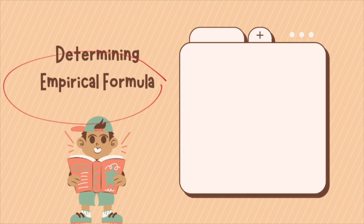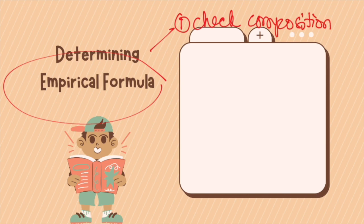The first step is to check the composition of your compound to be sure each element is given in grams. If the composition is given in percentages, then you have to convert them to grams, assuming a 100-gram sample — because the total is 100%, that equals 100 grams per sample.